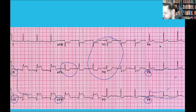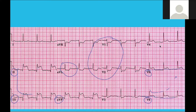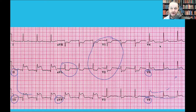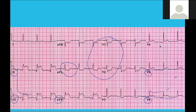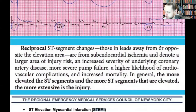How would you call this MI? Inferior-lateral MI — correct. And which coronary artery is involved? The circumflex and probably the RCA, with possible posterior wall involvement as well.